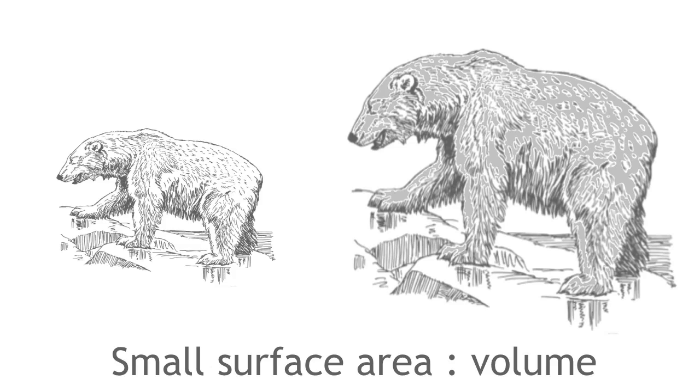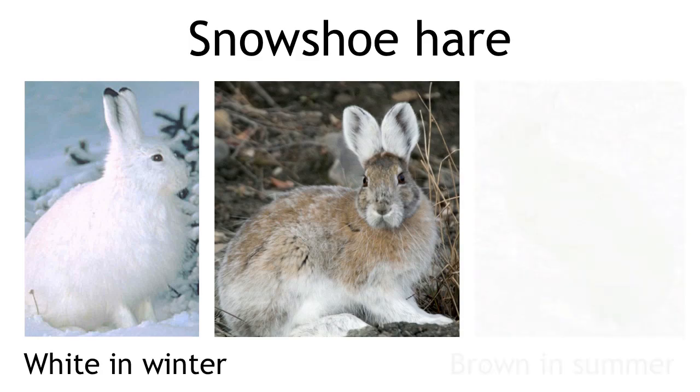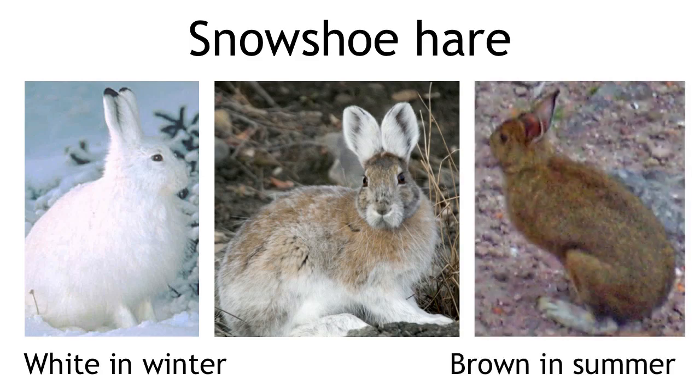Another interesting example of an adaptation is the fur of the snowshoe hare, whose fur changes color. It is white in the winter to hide in snow and brown in the summer to camouflage in grass.